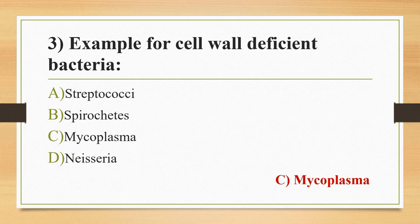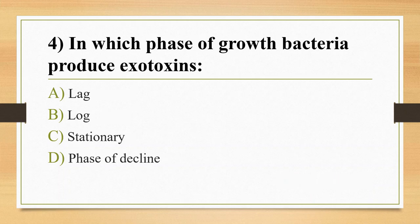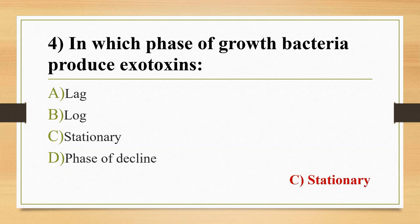Fourth question: In which phase of growth do bacteria produce exotoxins? Option A, Lag phase; Option B, Log phase; Option C, Stationary phase; Option D, Phase of decline. The answer is Option C, Stationary phase. Bacterial growth progresses in four phases: Lag phase, Log phase, Stationary phase, and Decline phase.